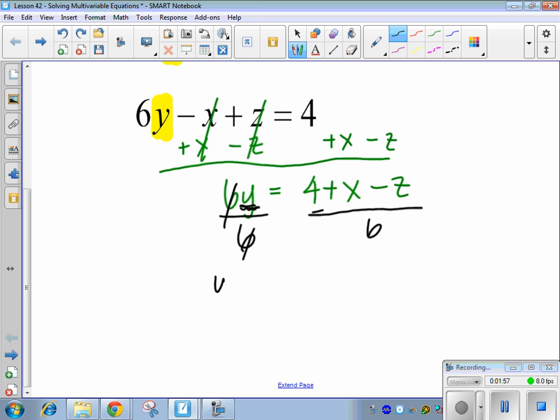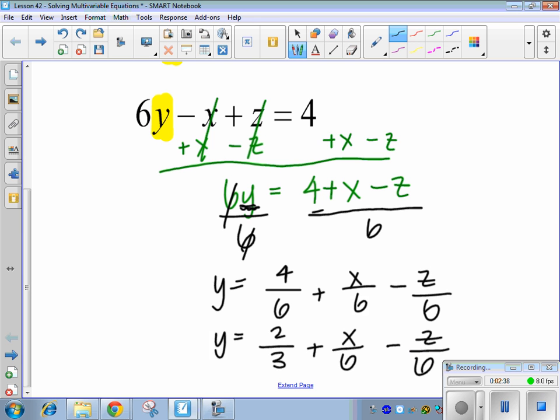I need to divide this whole thing by 6. Those go away, and I get y equals this thing, except what we want you guys to do is divide each piece by 6. So it's going to be 4 over 6 plus x over 6 minus z over 6. 4 over 6 is not in its simplest form, so I need to write this again. 4 over 6 is the same thing as 2 thirds. So 2 thirds plus x over 6 minus z over 6.